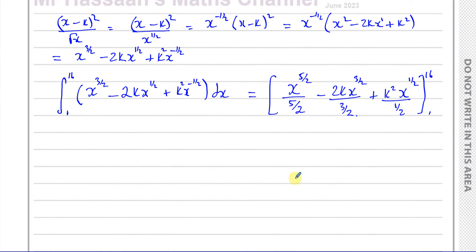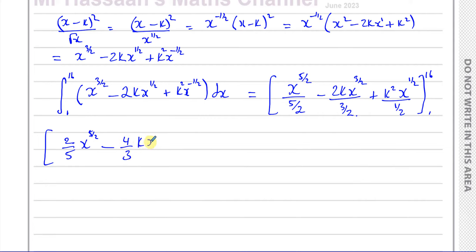Before substituting the limits, let me simplify. Dividing by five over two is multiplying by two fifths, giving two fifths times x to the five over two. Dividing 2 by three over two gives four over three, so we have minus four over three times k times x to the three over two. Dividing k squared by one half is multiplying by 2, giving plus 2k squared times x to the half. The limits are 16 and 1.